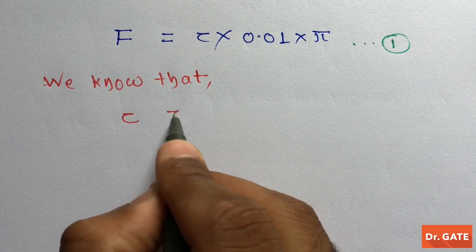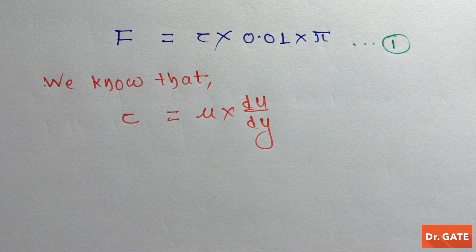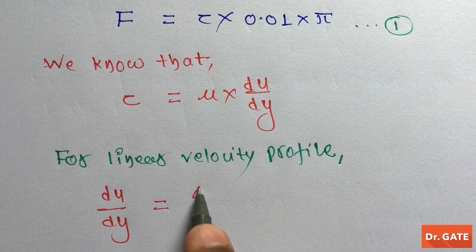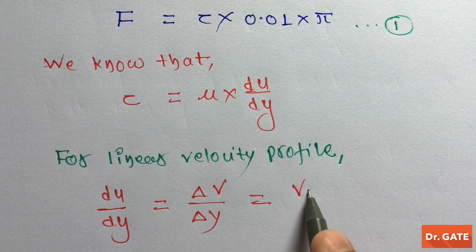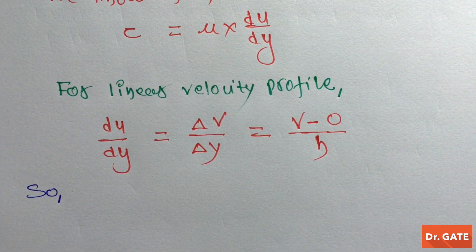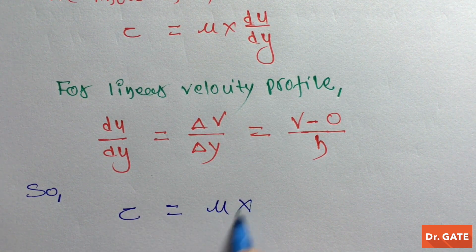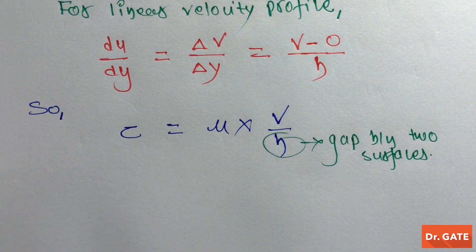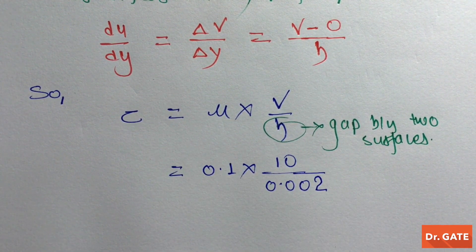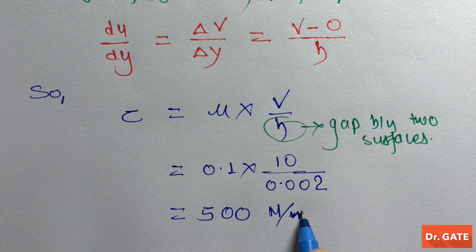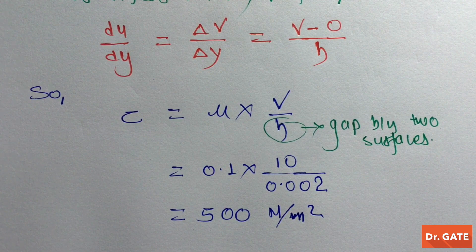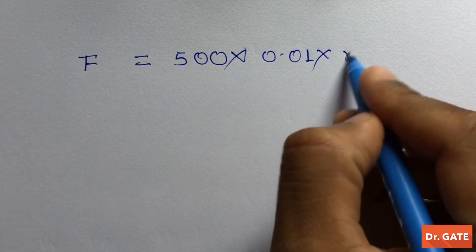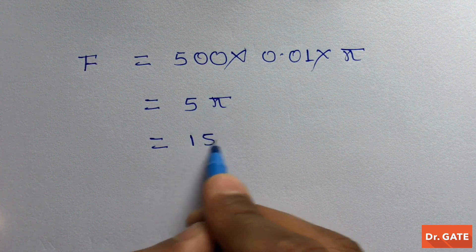Let this be equation 1. We know that τ = mu × du/dy. For a linear velocity profile, du/dy = ΔV/h, where h is the gap between the two surfaces. On putting the given values, the wall shear resistance is 500 N/m². On substituting into equation 1, the frictional resisting force per 100 mm length of the bearing is 15.7 Newtons.